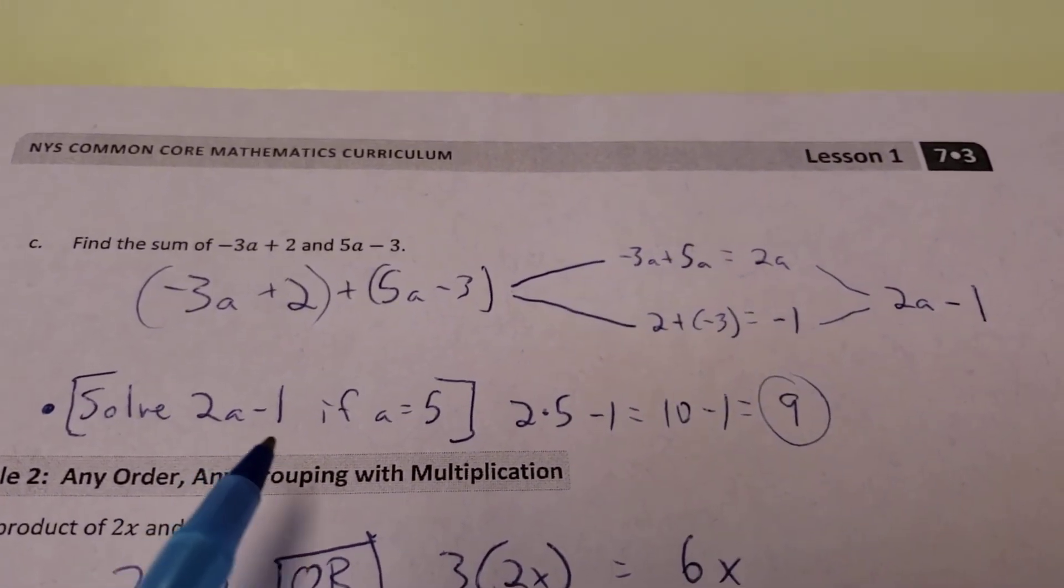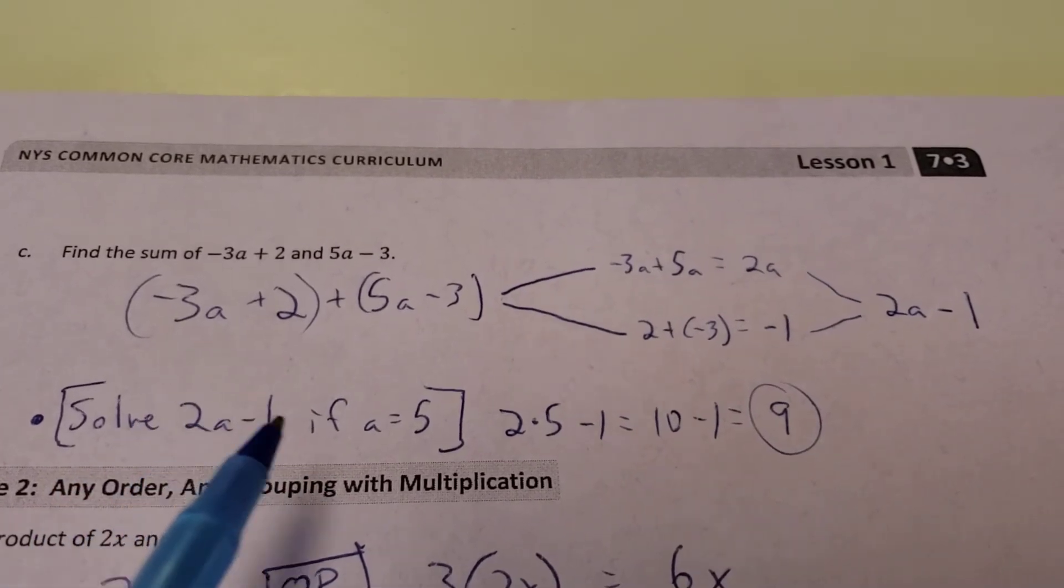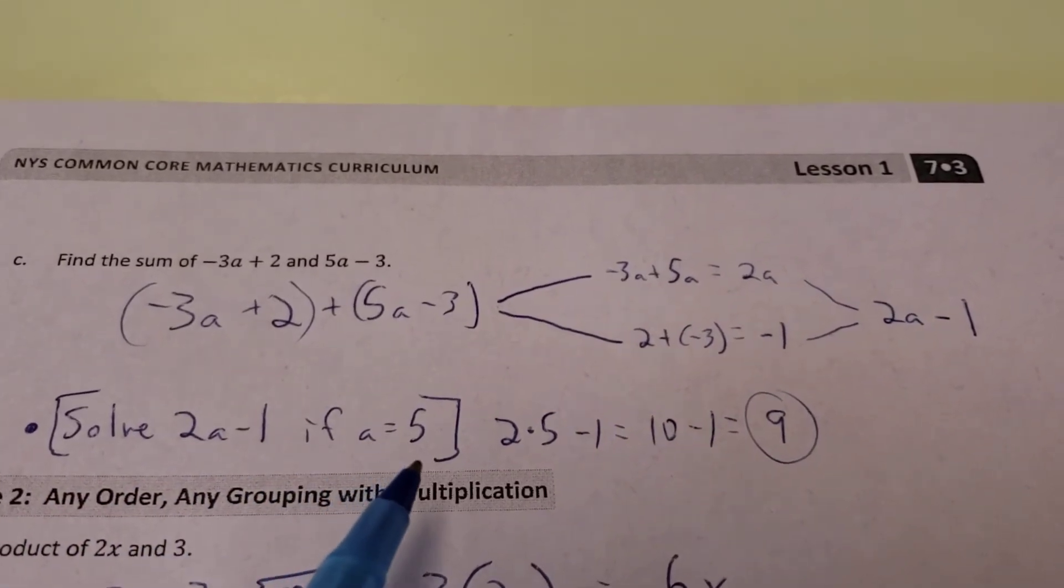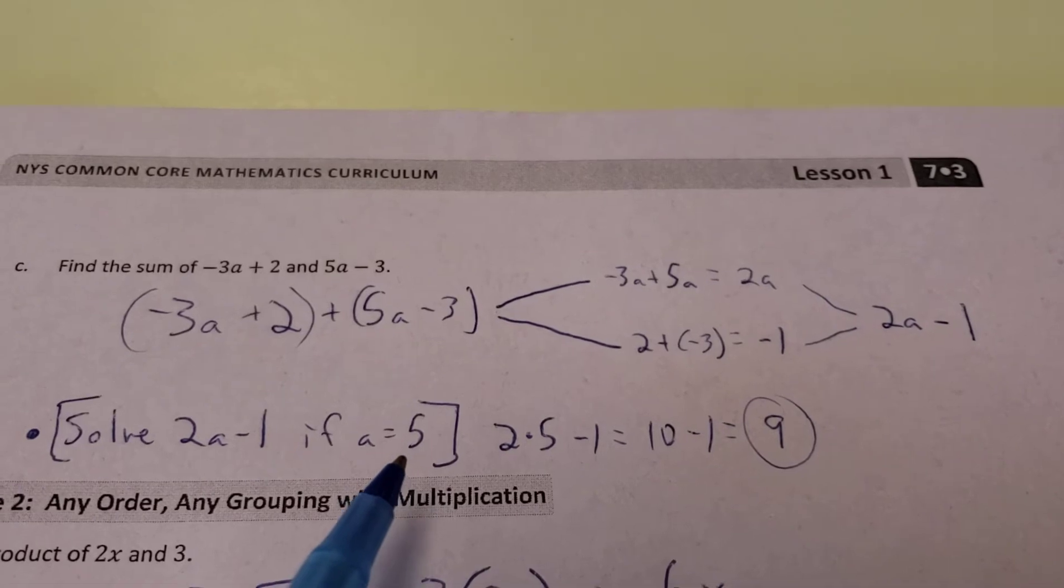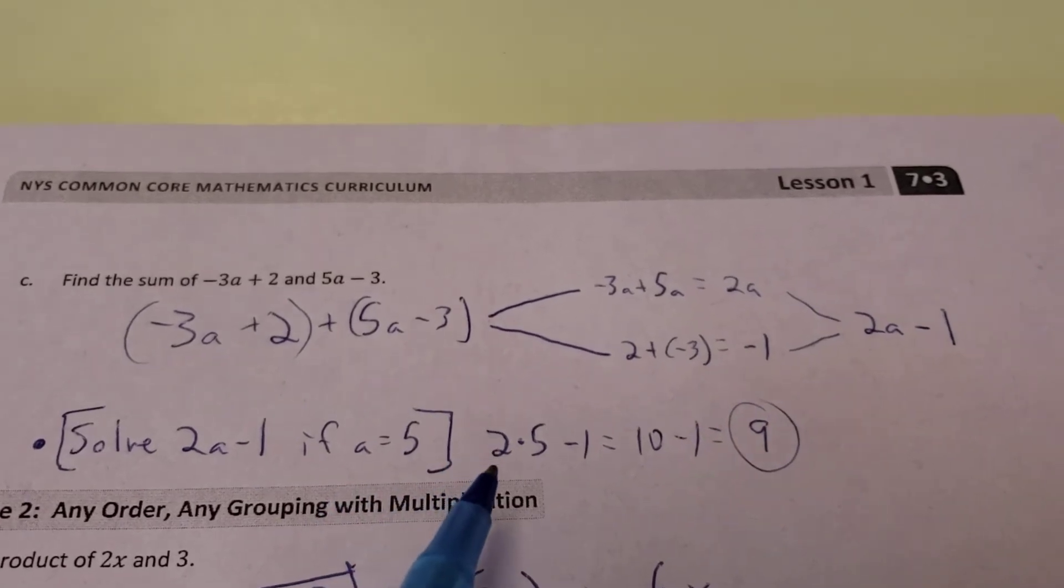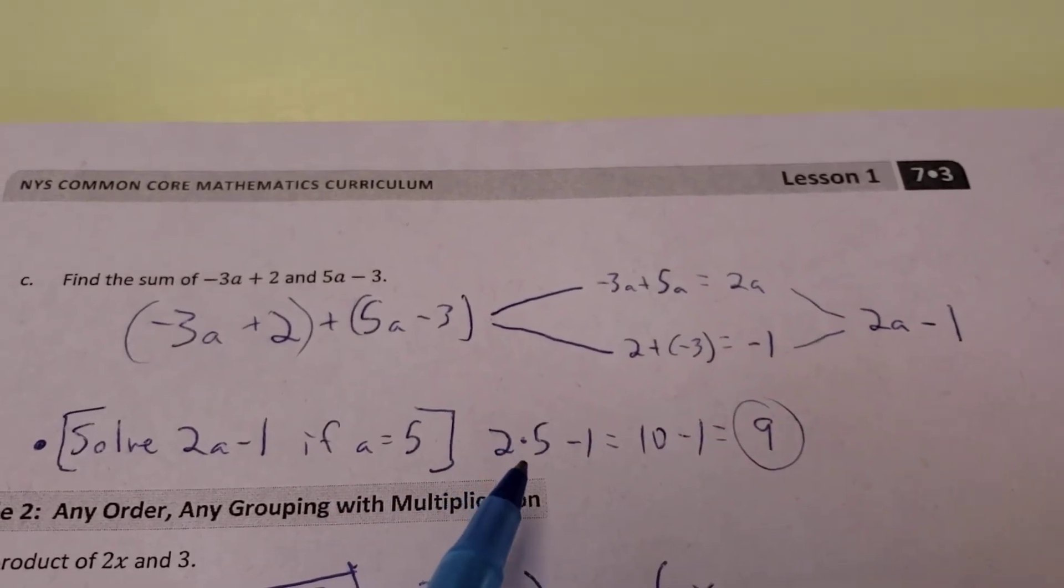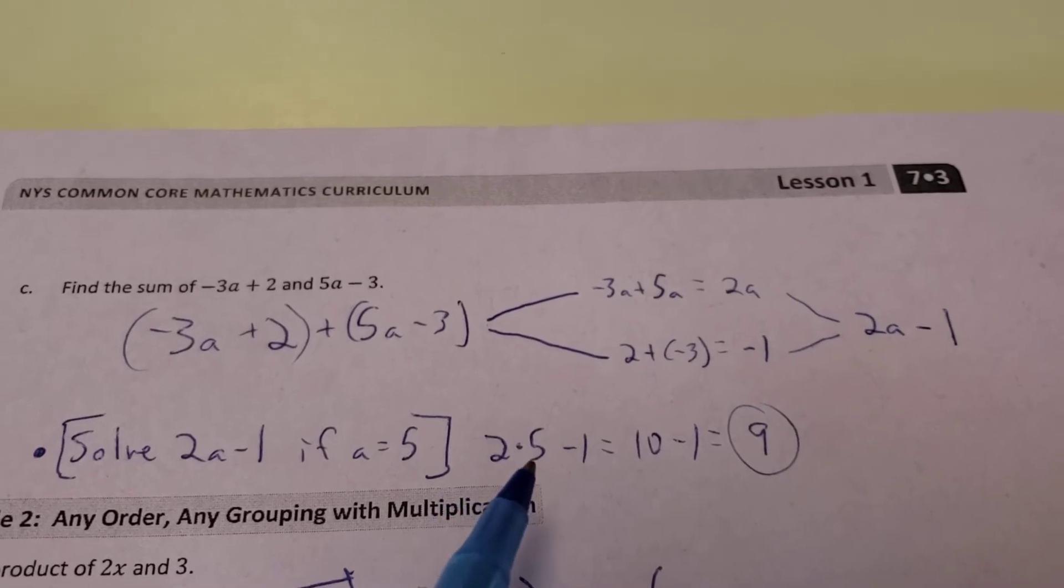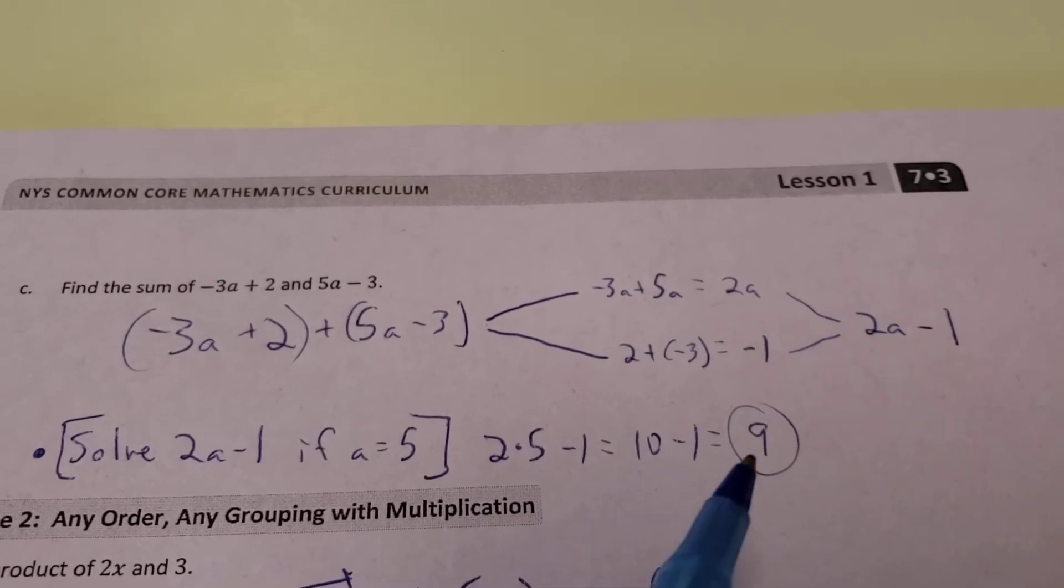Now, I could actually solve that expression, 2a minus 1, if I know what a equals. So we'll pretend that a equals 5. If that's the case, it's not 2 times a anymore. It's 2 times 5, then I can take away 1. 2 times 5 gives you 10, and 10 minus 1 is 9.